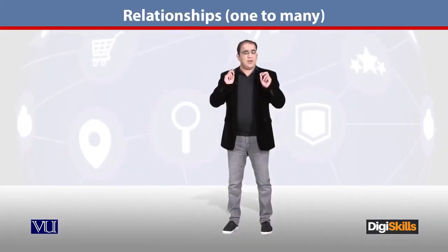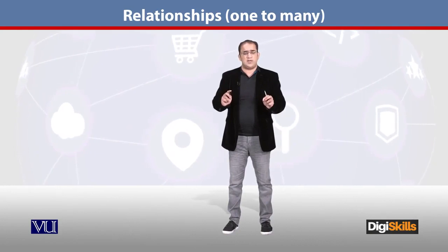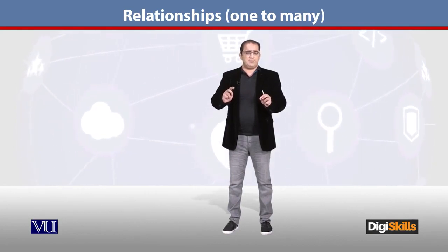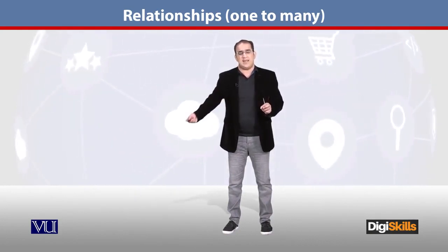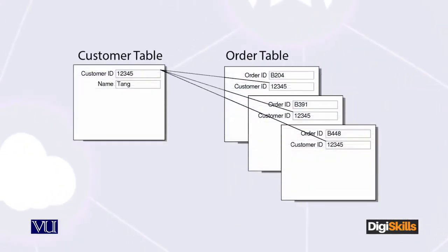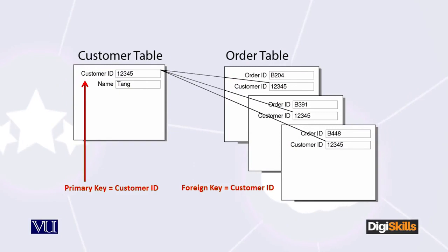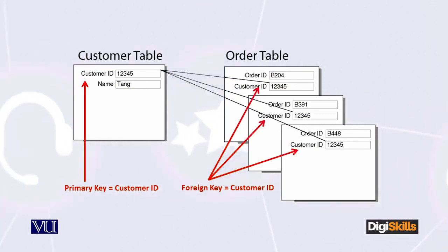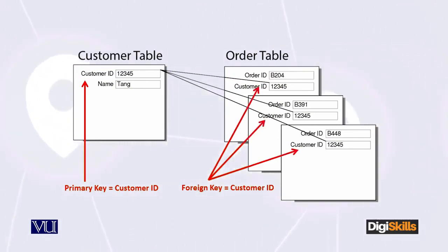The primary key of the 'one' side table — which is the parent table — this is a rule. When we actually implement this, we have to take care of this rule: the primary key of the 'one' side table will come into the 'many' side table as a foreign key.